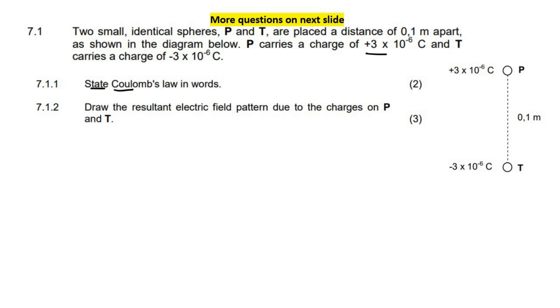First question says state Coulomb's law. So let's write out Coulomb's law's equation, which is KQ1Q2 over R squared. Now, from the formula, you can work out the definition because what it says here is that the electrostatic force of attraction between two objects is directly proportional to the product of their charges and inversely proportional to the square of the distance between them.